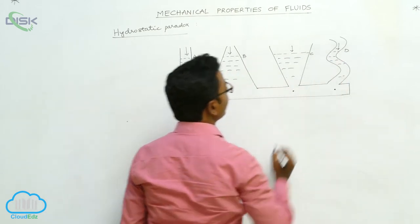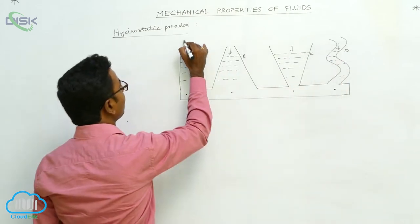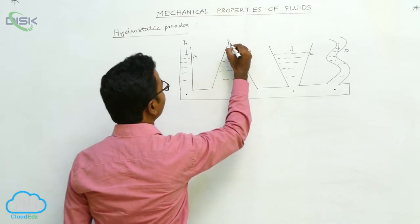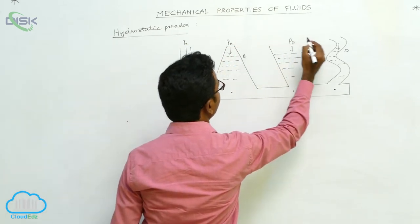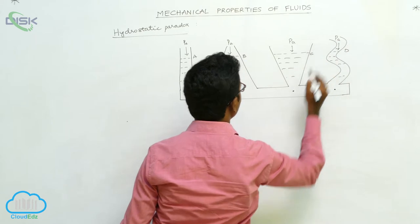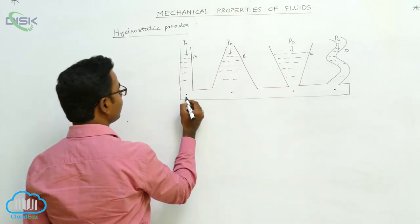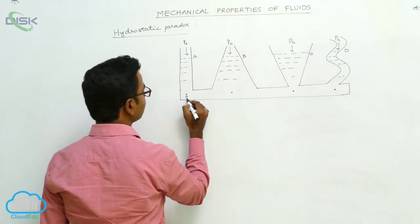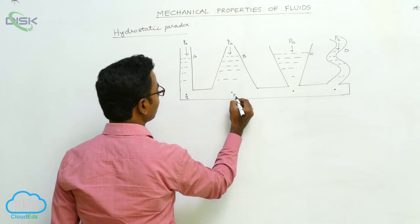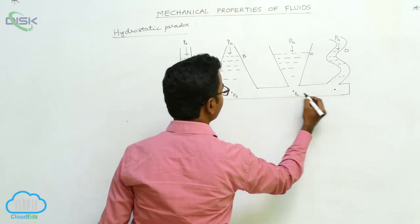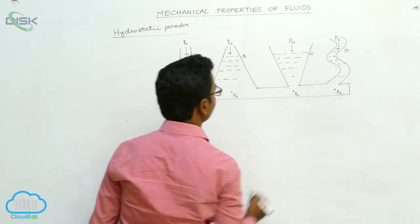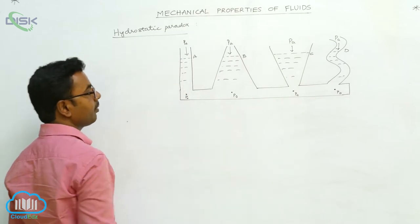Every container is open to the atmosphere, so on the top surface of every container there is atmospheric pressure PA. And suppose at these points there are different pressures: PA, PB, PC, and PD.